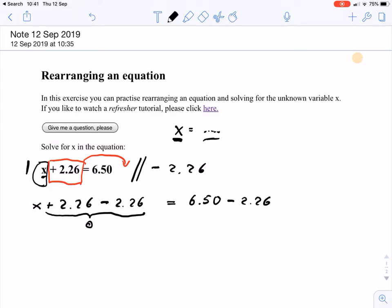And here we get 6.50 minus 2.26, and that of course gives us 4.24. So what have we got on the left hand side now? We've got x plus 0, and for this we can easily write x equals, and on the right hand side we have 4.24.